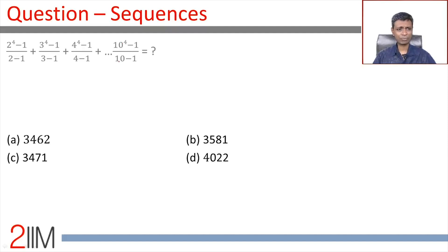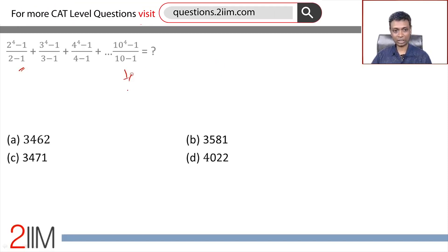We can add 1^4-1/(1-1) which becomes infinity, so that's why they probably not done that. We are going to simplify this first. Before we go further, can we get a general expression here? Take any term, you can call it as m^4-1/(m-1).